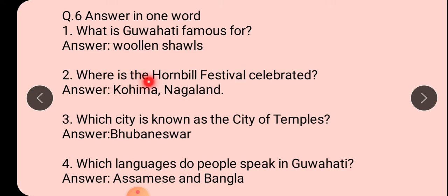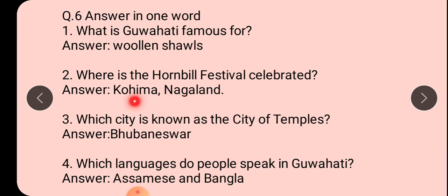Second - where is the hornbill festival celebrated? Ye hornbill festival kahan pe celebrate hota hai? Kohima. Kohima kahan pe hai? Nagaland. To aap ko koi bhi ek likhna hoga answer. That will do - one is Kohima, other can be Nagaland. Ye jo Nagaland ka Kohima city hai, to aap ko Kohima main answer hai. So just remember Kohima. Where is the hornbill festival celebrated? Kohima, Nagaland.